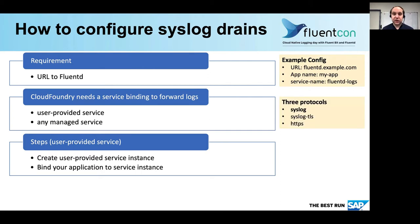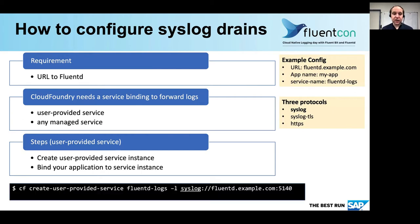For the forwarding we can choose between three protocols. The first one we will use is plain syslog, and there are more secure options with TLS support for syslog or syslog over HTTPS. Let's use the CF CLI commands for this. First we create a user provided service with the name fluentd-logs, and with the -l switch we give it the syslog drain URL that points to our running Fluentd instance. Then we bind our app, my app, to the newly created service instance fluentd-logs, and that's all there is.